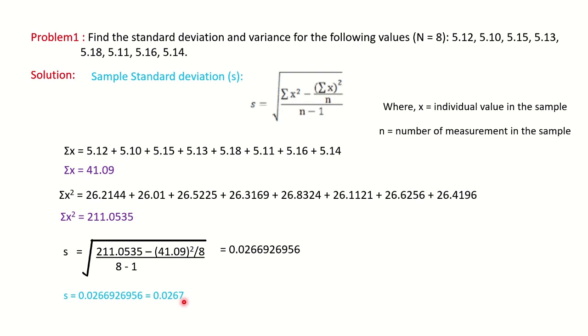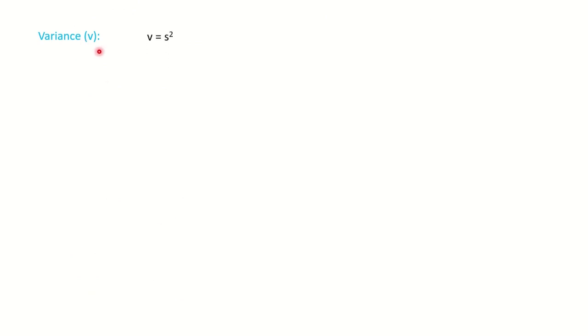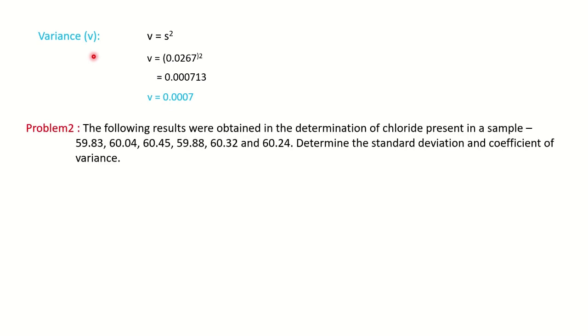This is the answer for the first question. The same question also asks you to find the variance. Variance is nothing but the square of the standard deviation, so first calculate the standard deviation and then square it. You will get 0.0007 as the result for variance. In this way, both standard deviation and variance are calculated for the first problem.